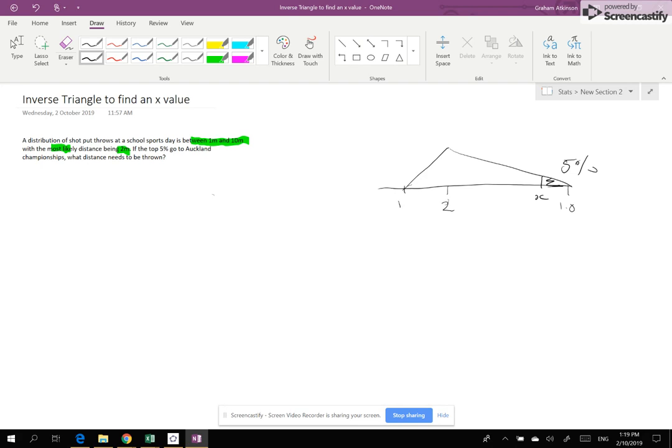So because this is a continuous distribution, the area equals the probability. So I need to be able to work out the area of that triangle and therefore I need to be able to work out the height of that triangle.